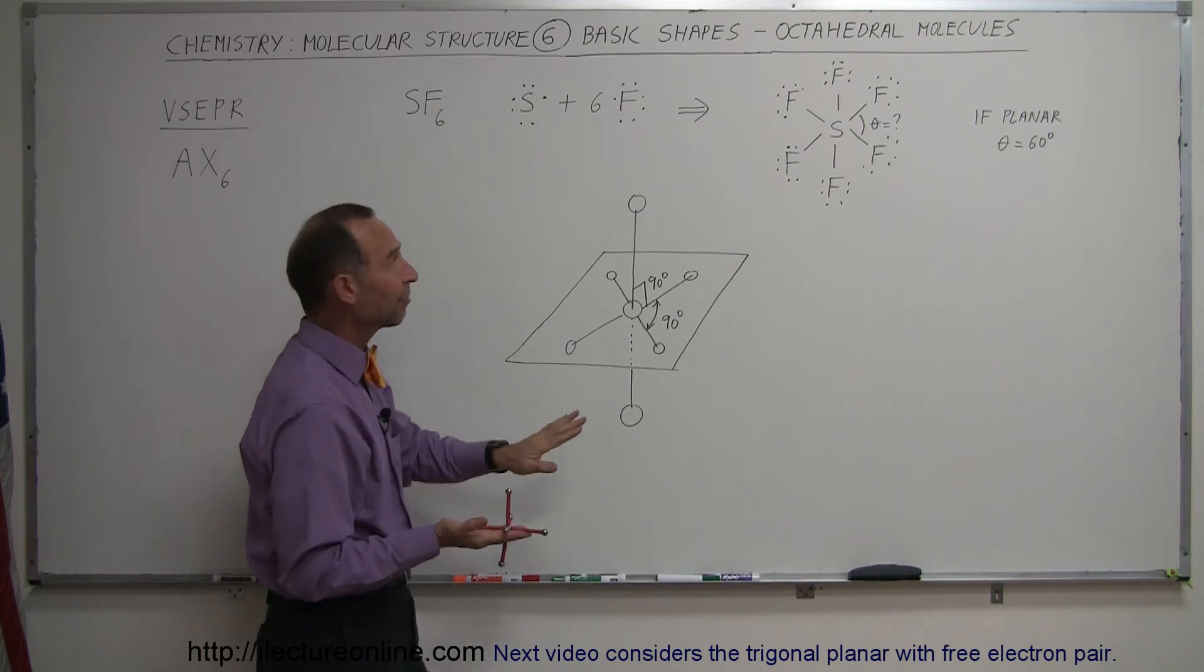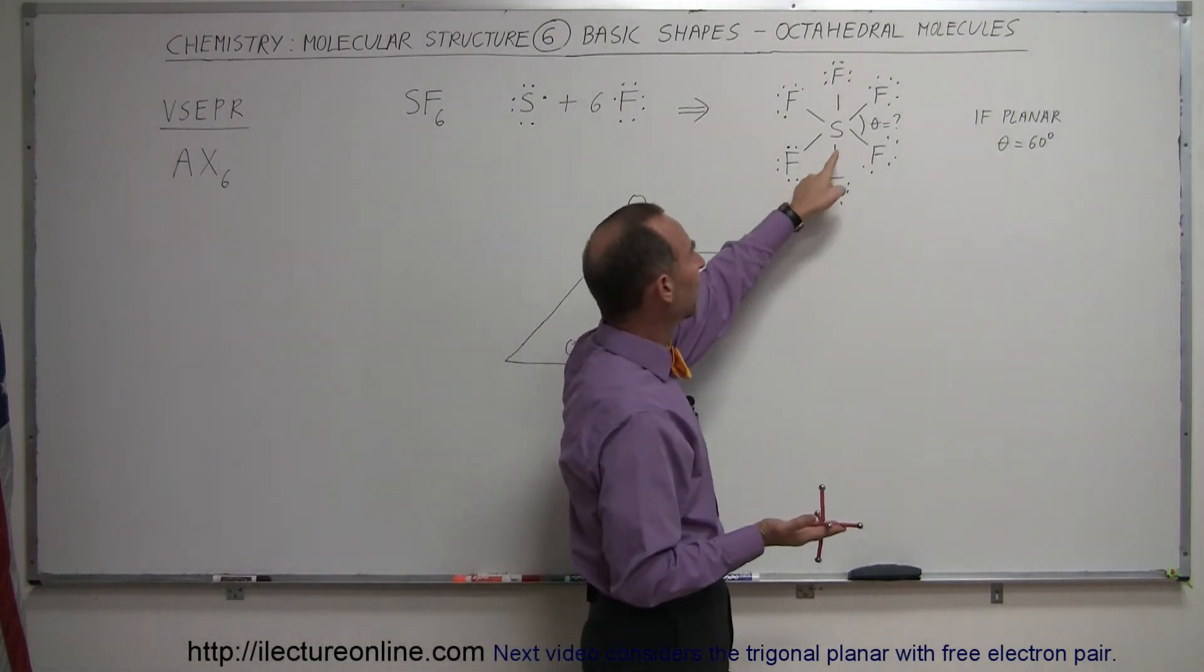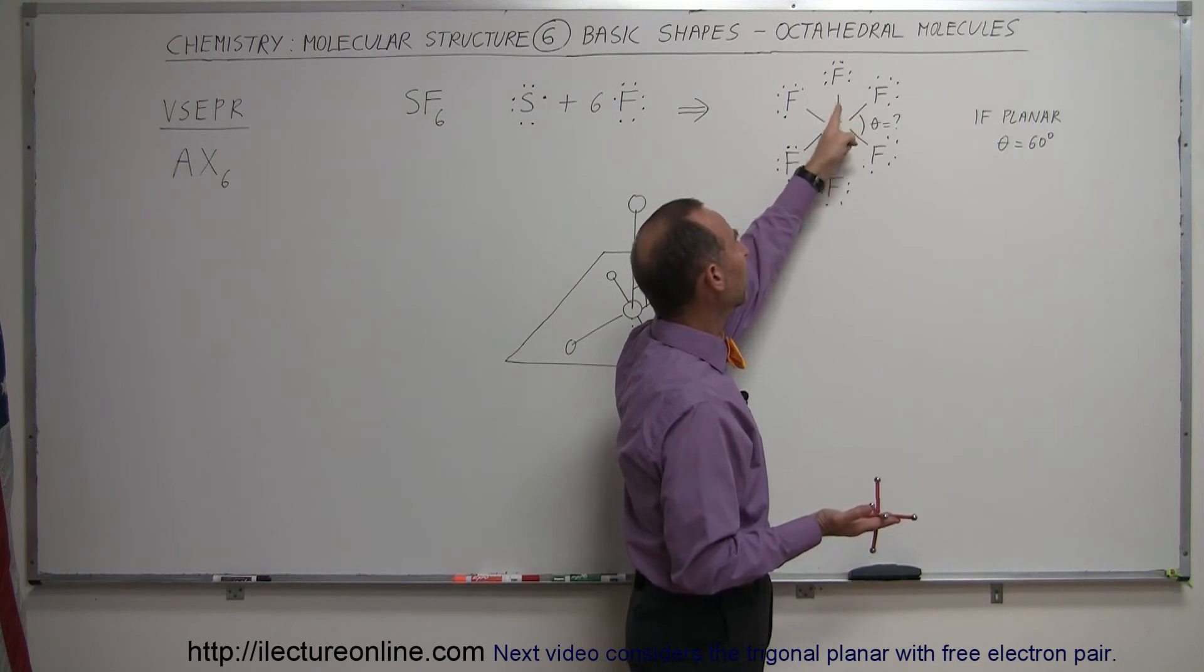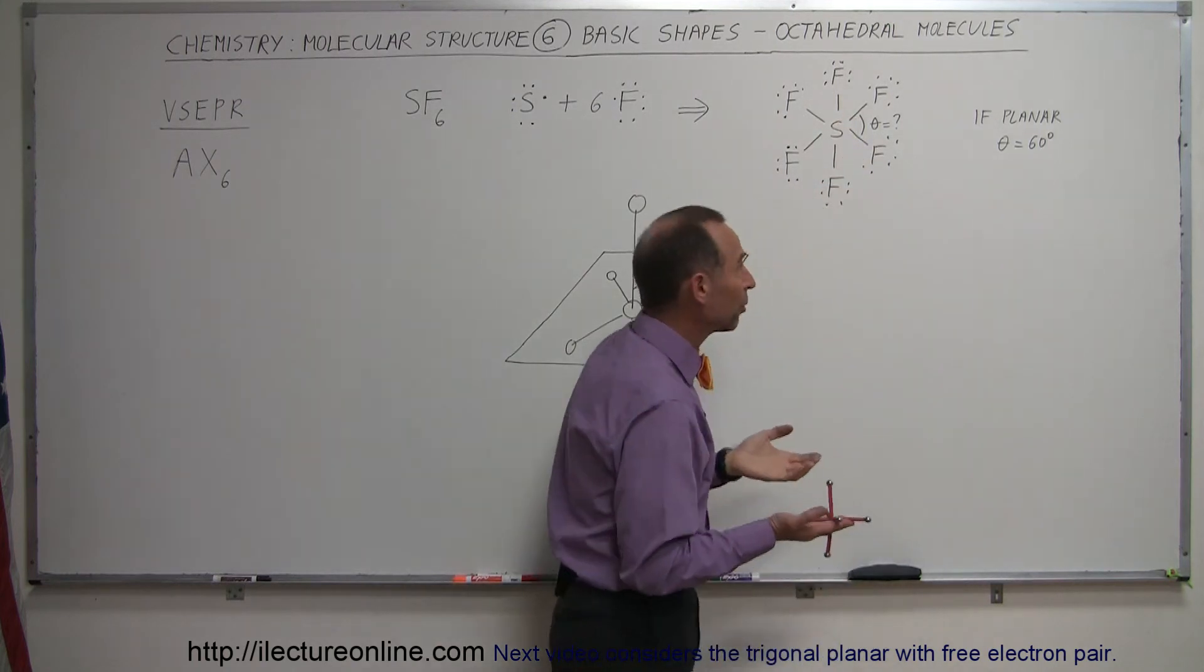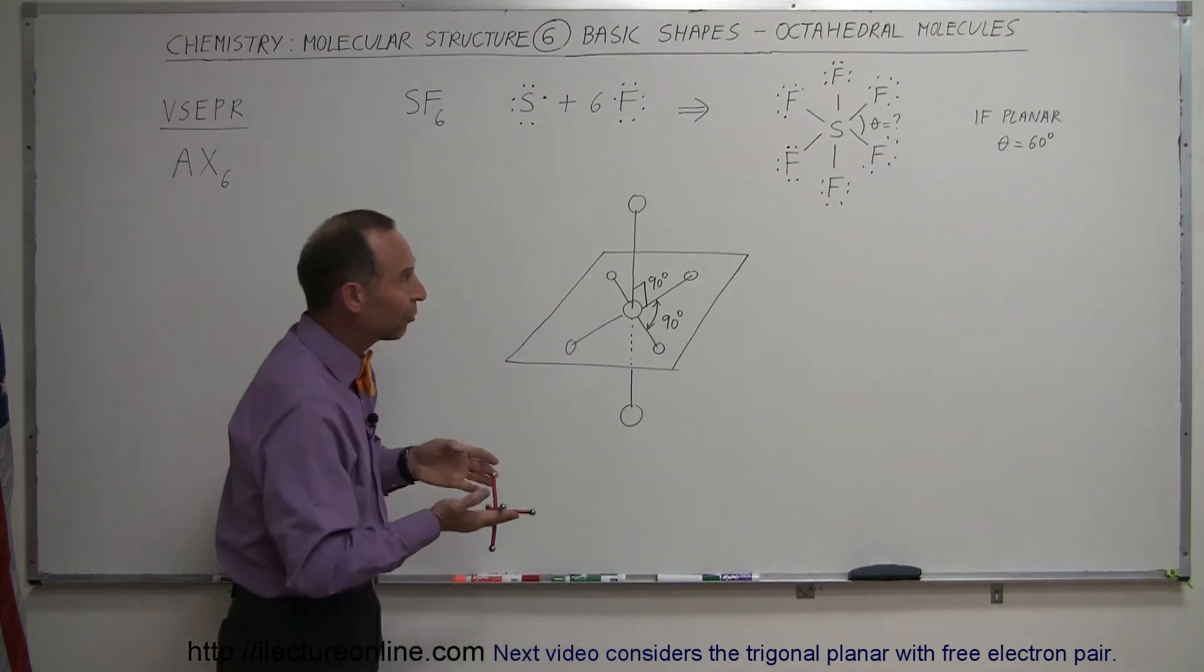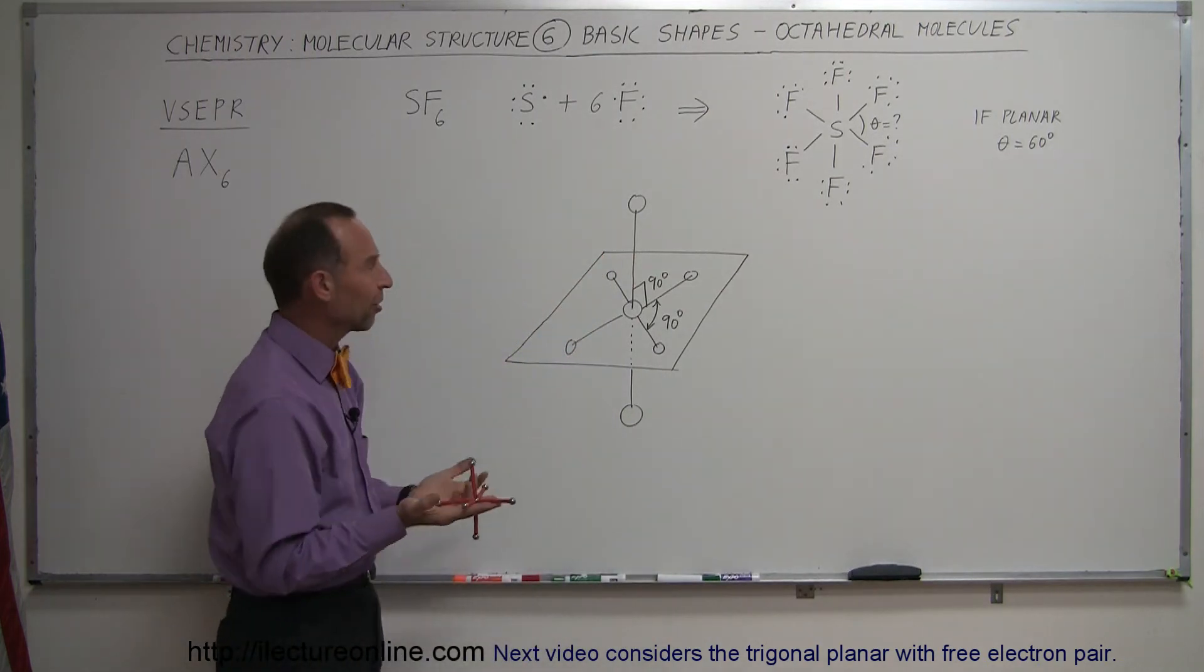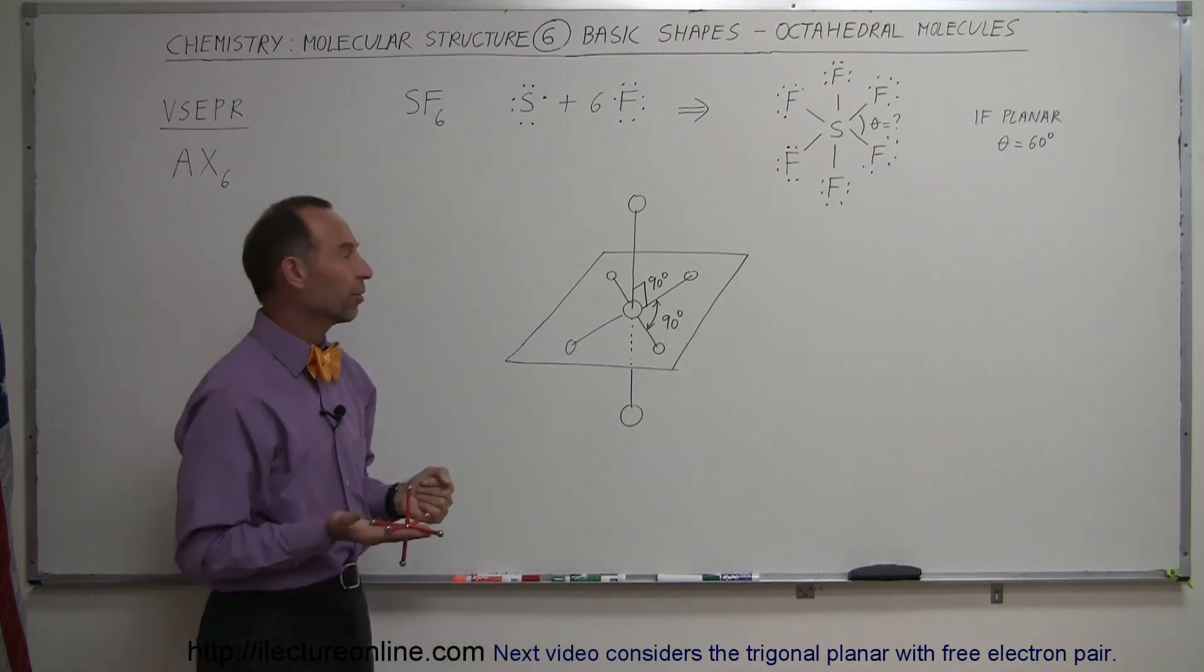Of course, if you didn't have that, if you had, for example, a planar molecule, the angles between the bond electrons would only be 60 degrees, which is not acceptable. There would be too much repulsive forces. And so they resettle themselves in such a way that they're as far away from one another as possible.